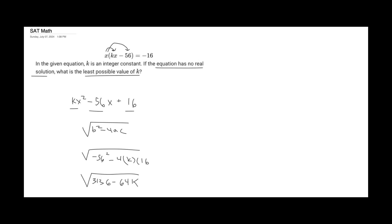As we said before, we want this discriminant to be negative, but it also has to be the least possible value of k. And it's an integer value. So we don't want any decimals. So first off, let's just find the value of k that makes this 0.